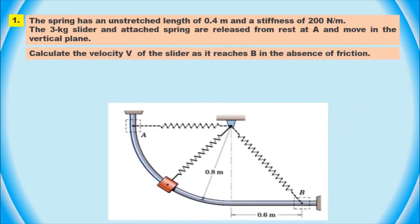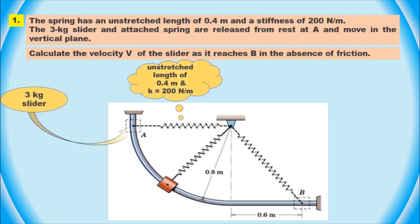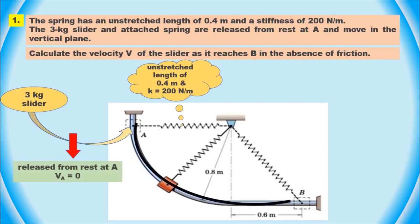In this scenario, we have a spring that has an unstretched length of 0.4 meters and a stiffness of 200 newtons per meter. We also have a 3 kg slider that is attached to this spring and is released from rest at point A. The object and spring move in the vertical plane.